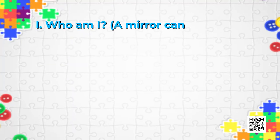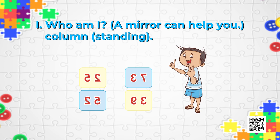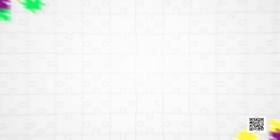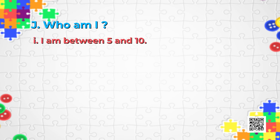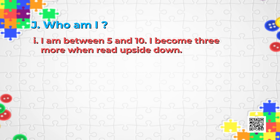Here they are asking us: who am I? A mirror can help you! I can see the smiles on your faces, which tells me you enjoyed looking at the numbers in the mirror. Now in Puzzle J we have the same question — who am I? The first sub-question: I am between five and ten, and I become three more when read upside down.